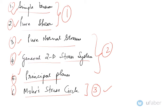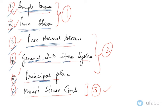In this chapter we would be going through these six topics: a body subjected to simple tension, a body subjected to pure shear, pure normal stresses, generalized 2D stress system, principal planes, and Mohr's stress circle.